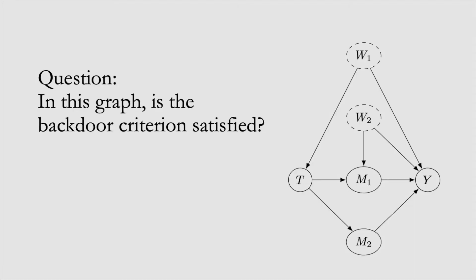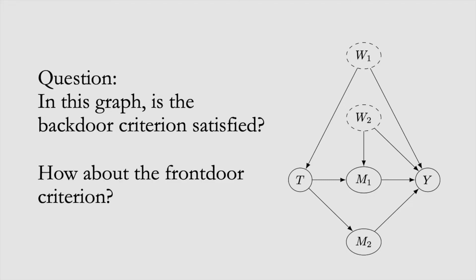Consider this graph here, where w1 and w2 are unobserved. In this graph, is the backdoor criterion satisfied? How about the frontdoor criterion - is the frontdoor criterion satisfied?